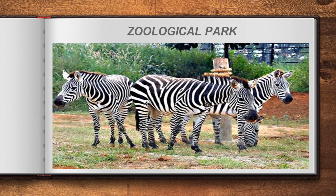A zoological park is different from a zoo — in a zoological park, wild animals are kept free in a protected environmental condition under human care. In this setting, researchers can naturally observe the animal's behavior, food patterns, and other characters as they would behave in their own environment.